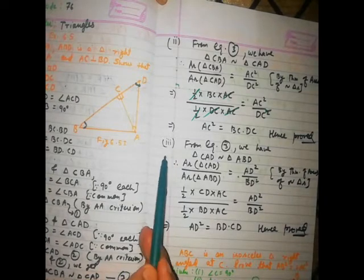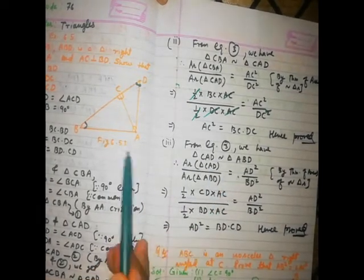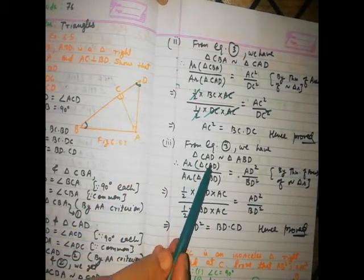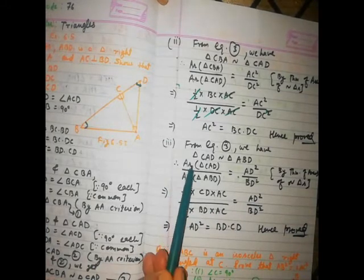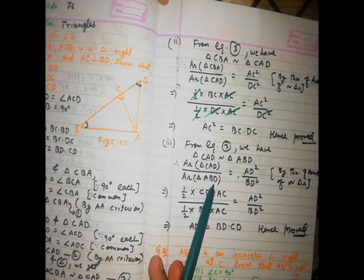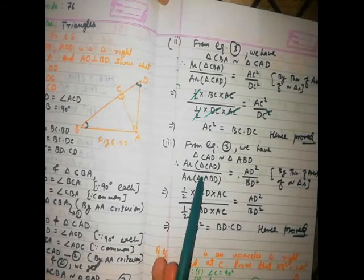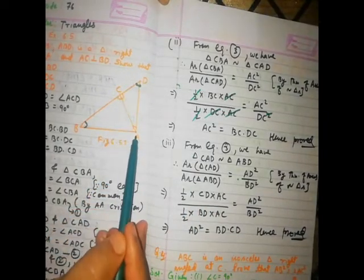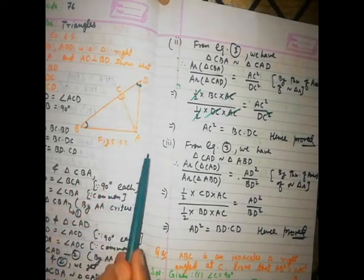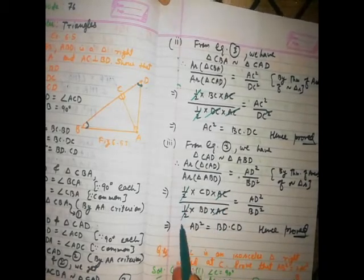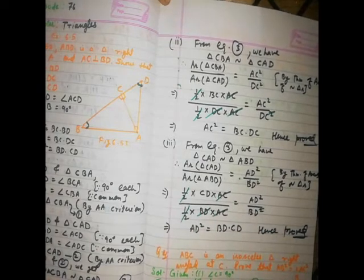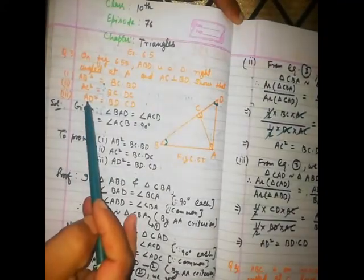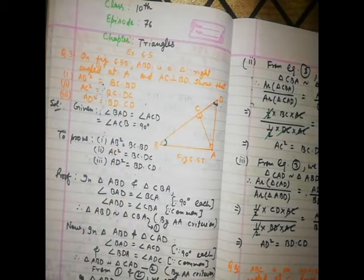To prove Part 3 — AD² = BD · CD — we take the whole triangle ABD and the upper triangle CAD. By the theorem of areas of similar triangles: area of CAD / area of ABD = AD² / BD². Using area = ½ × base × altitude: in triangle CAD, base is CD and altitude is AC; in triangle ABD, base is BD and altitude is AC. After cancelling AC, ½, and one power of BD, we get AD² = BD · CD. Hence Part 3 is proved, completing question number 3.